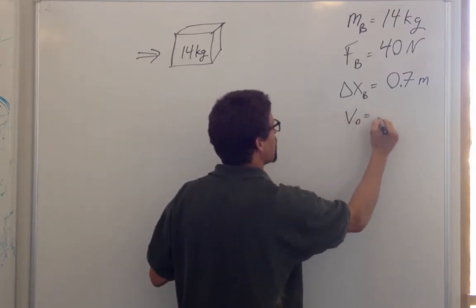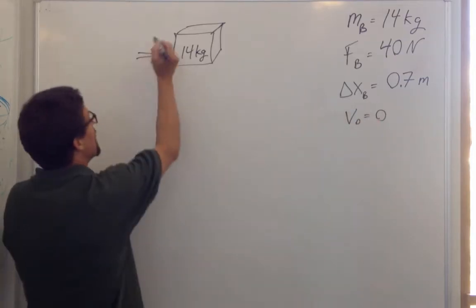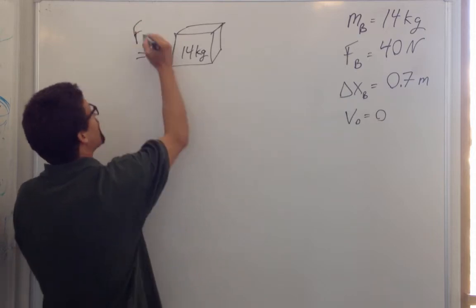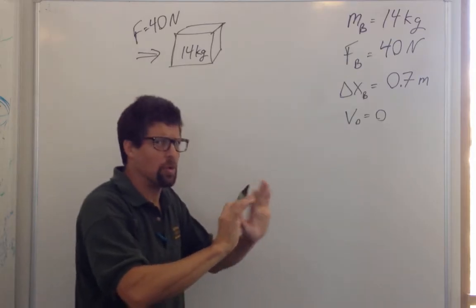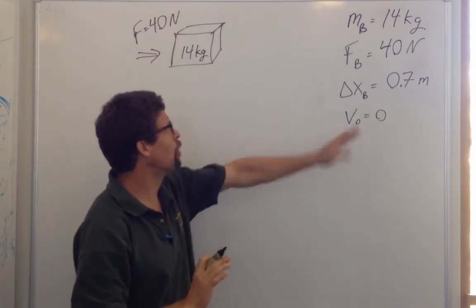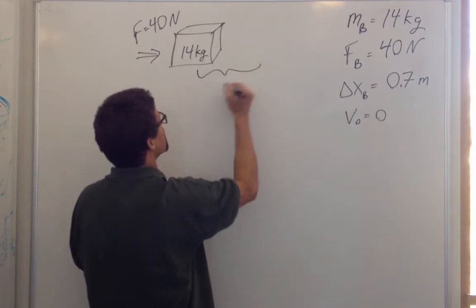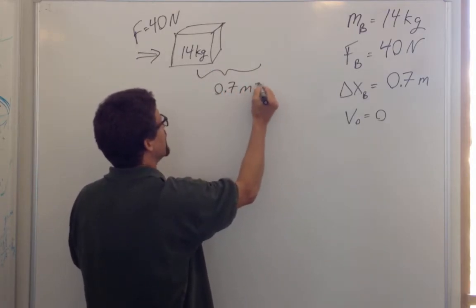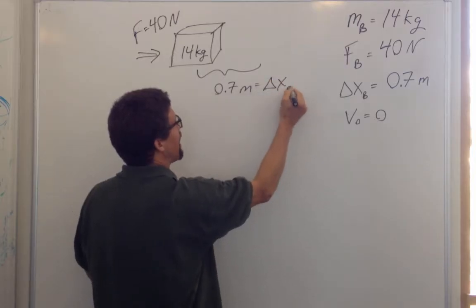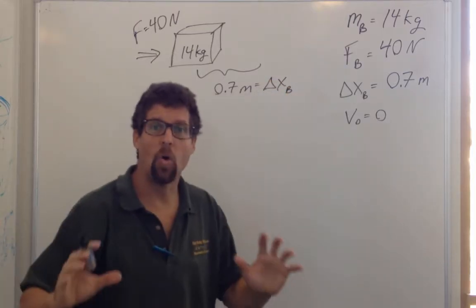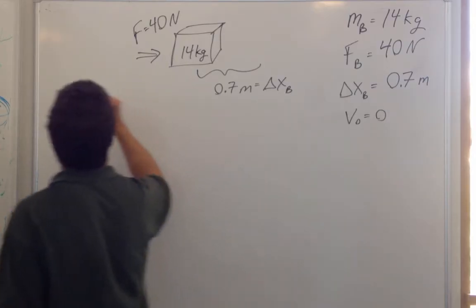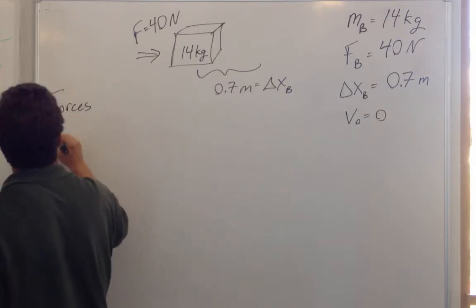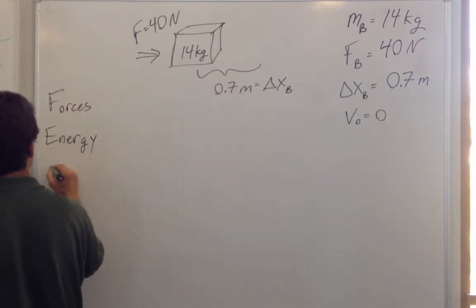V-naught equals zero. You start at rest and put a force of 40 Newtons on it, and it's going to move 0.7 meters — that's the change in displacement of the box. I want to analyze this from the perspective of forces, energy, momentum, and kinematics.